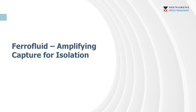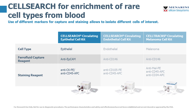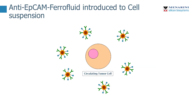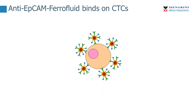Now I'd like to address ferrofluid. The CellSearch platform uses a ferrofluid that amplifies capture of cells for enrichment and isolation. CellSearch has a variety of kits and we use different ferrofluids to target different chemistries and different cell types. When we use these different markers in conjunction with our ferrofluids, we can more closely define a population of cells and understand how they contribute to a phenotype. The ferrofluid itself is an iron nanoparticle with a polymer layer. We then conjugate an anti-EpCAM antibody and a biotin analog to create a snowflake shape. When an anti-EpCAM ferrofluid is introduced to a cell suspension — whole blood, cerebrospinal fluid, et cetera — the ferrofluid will bind to any EpCAM present on those circulating tumor cells or other EpCAM positive cells.